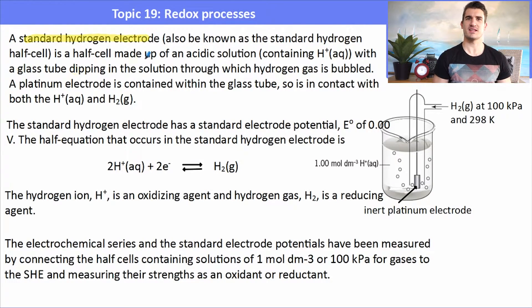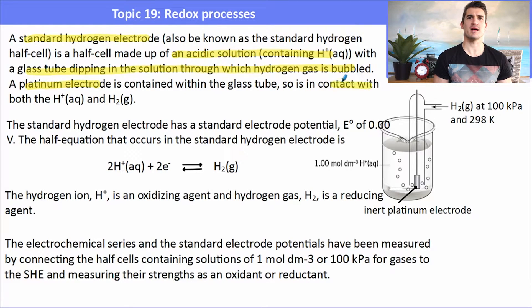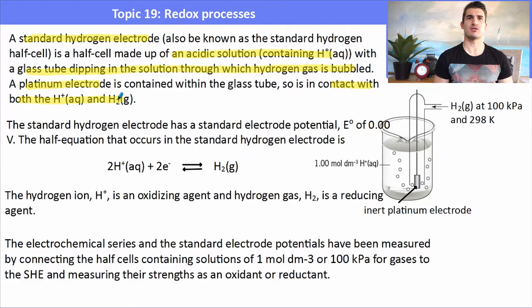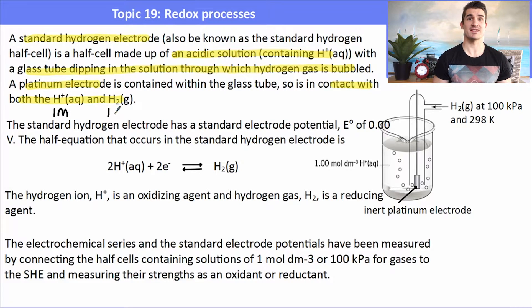These EMF values come from being connected to the Standard Hydrogen Electrode, or SHE. It consists of a 1 mol dm⁻³ solution of H⁺ ions with hydrogen gas bubbled through via a platinum electrode, which is in contact with both the solution and the gas.